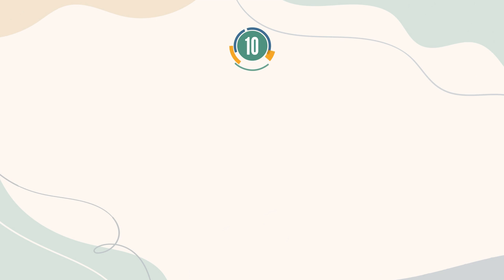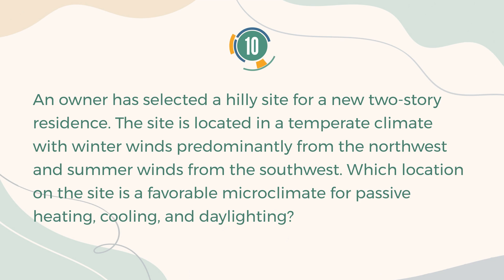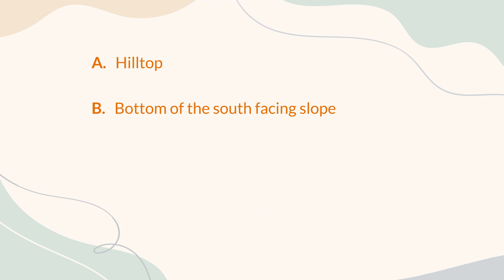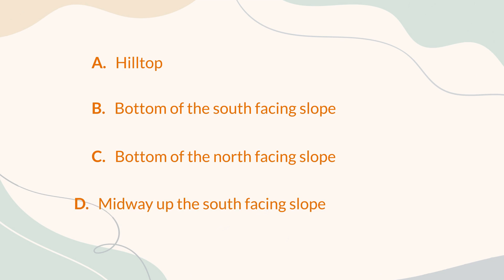Number 10. An owner has selected a hilly site for a new two-story residence. The site is located in a temperate climate with winter winds predominantly from the northwest and summer winds from the southwest. Which location on the site is a favorable microclimate for passive heating, cooling, and daylighting? A. Hilltop. B. Bottom of the south-facing slope. C. Bottom of the north-facing slope. D. Midway up the south-facing slope.